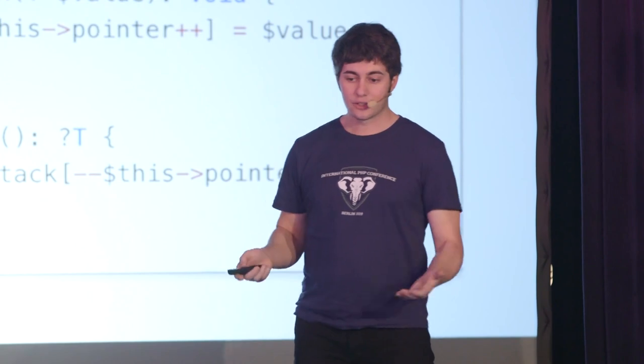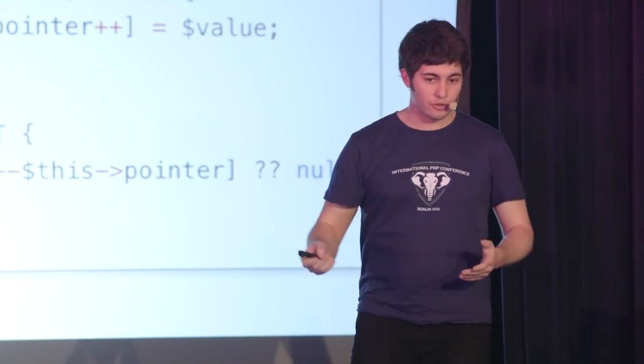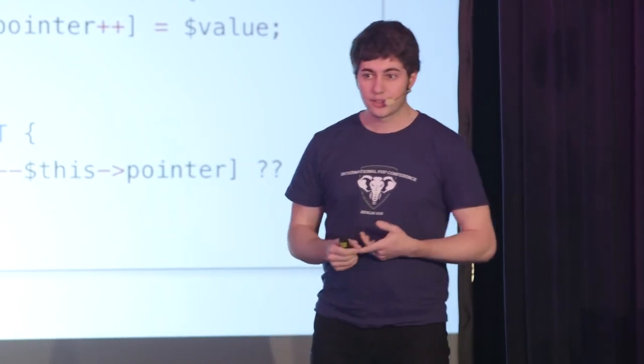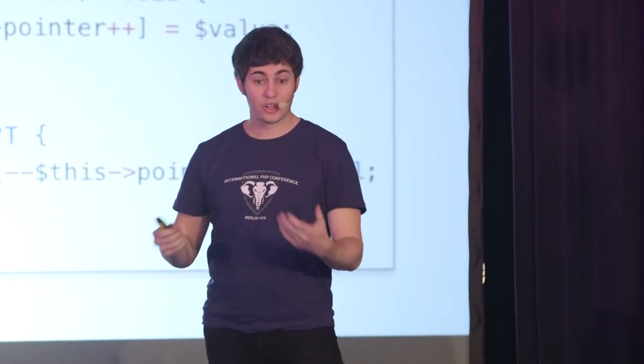Here's an example of a stack data structure — class Stack with an angle bracket T. This capital T is a type parameter repeated throughout the class body: in the push function arguments and in the pop function. The same data type you push onto the stack, you pop off the stack. The pop function returns a nullable T because if the stack is empty and you try to pop, you get null. This stack could work with any type — a stack of ints, strings, arrays, or classes. That's what makes this a generic data structure.